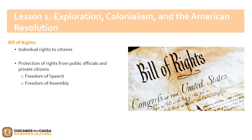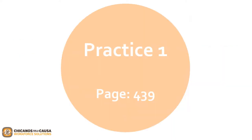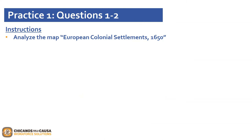There was a lot of information covered in this lesson. If you need to take a break, now is a good time, as it is time to move on to Practice 1. Practice 1 can be found on page 439. At this time, please pause the video and analyze the map for Practice 1, European Colonial Settlement 1650, found on page 439, and answer questions 1 and 2. When you are ready to start, click play.